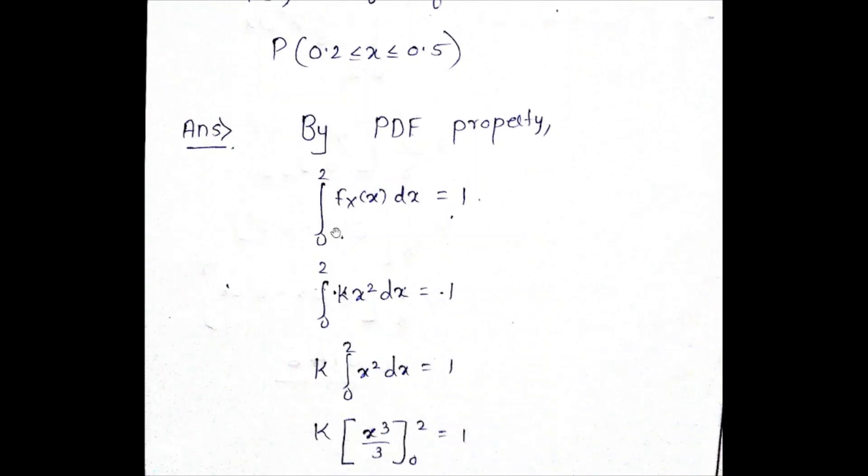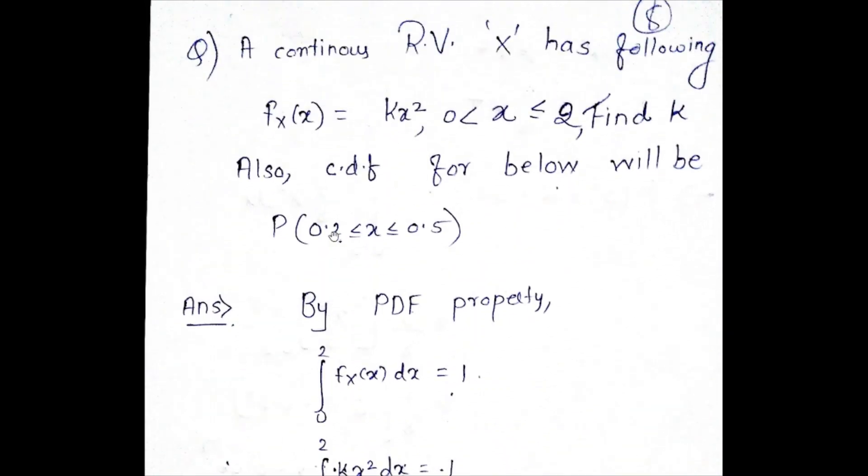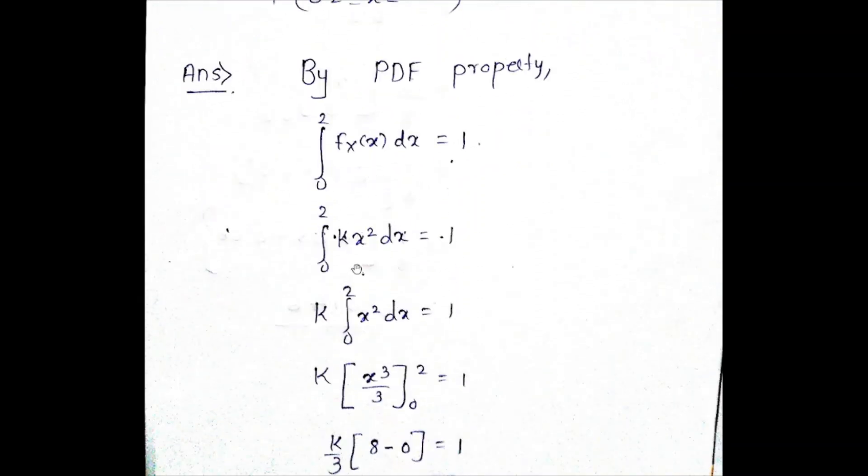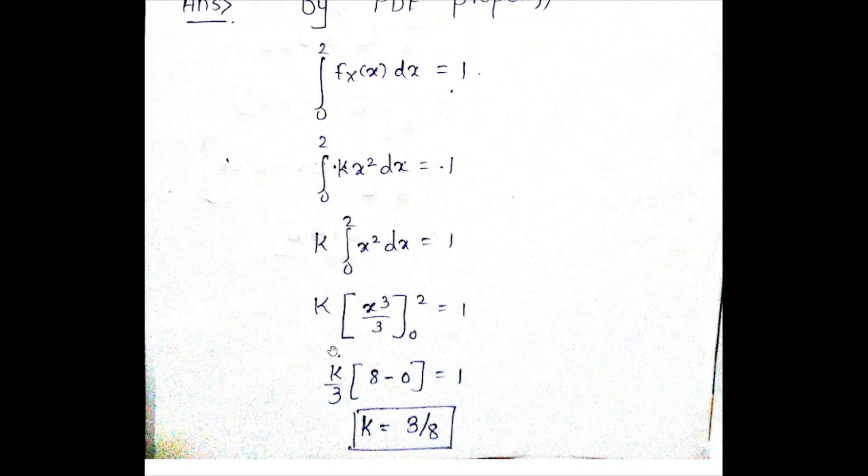The value from integral 0 to 2, because they are mentioned over here, the limits, is going to be equal to 1. f_x(x) value is given to you, and then find out the final value of k, which is equal to 3/8.